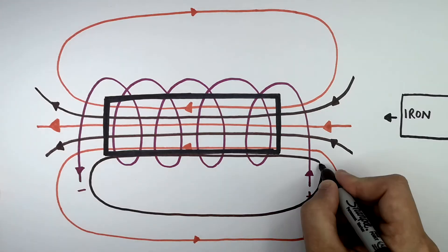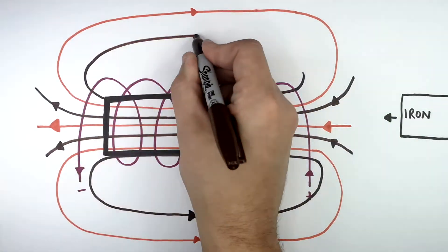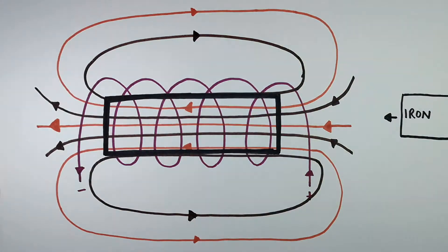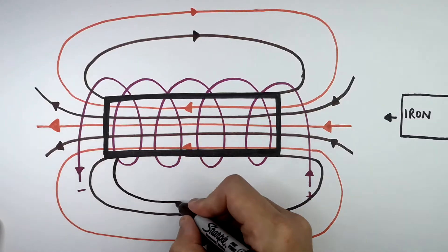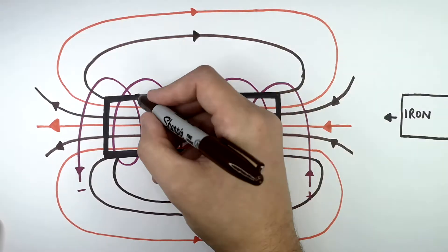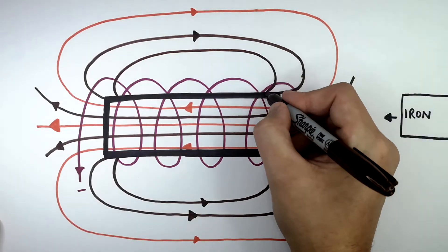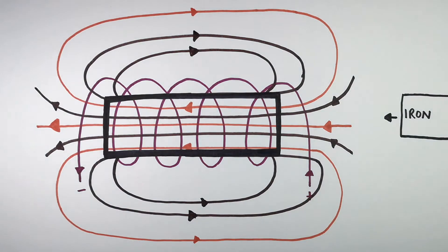On the outside of the solenoid, you can see more magnetic field lines being drawn around the iron bar, around the solenoid. The iron increases the magnetic strength of the solenoid.